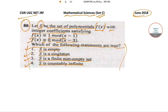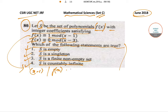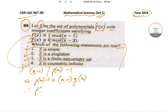S is the set of polynomials f(x) with integer coefficients which satisfies f(x) is congruent to 1 mod of (x minus 1) and f is congruent to 0 mod of (x minus 3). So f(x) congruent to 1 mod (x minus 1) implies that (x minus 1) divides f(x) minus 1, so that implies that f(x) minus 1 is equal to (x minus 1) into some function g(x), plus 1. This is for the first part.